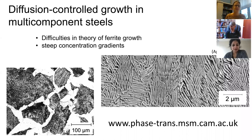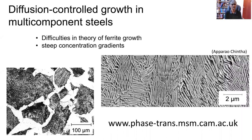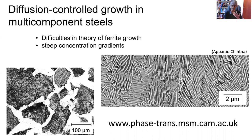Today I'm going to talk about a specific theoretical problem that has been bothering me for some time, but was actually identified in the original paper published by Coates back in the 70s but not actually solved. The problem involves diffusion theory and applies to transformations that are reconstructive in nature, for example the formation of allotriomorphic ferrite, illustrated on the left, and pearlite, illustrated on the right.